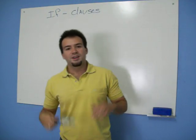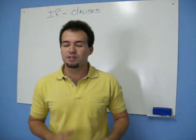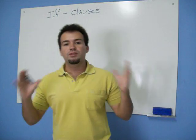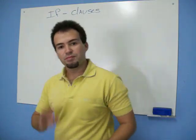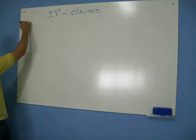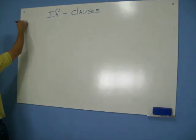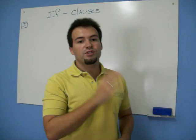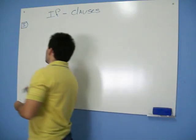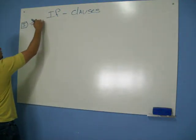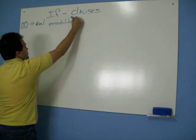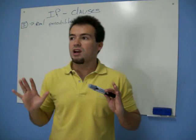Today let's talk about if-clauses. I know that some people have problems with this topic, but it's really simple and doesn't require a lot of attention — only contextualization. We have three types of if-clauses: one, two, and three. Today I'm going to talk about if-clause one, which deals with real possibilities.